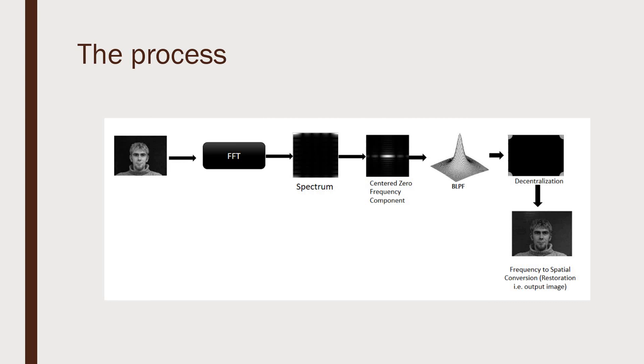Now what do we do? The process is simple. I have an input image, it goes to the FFT, the spectrum is there, and then we center the zero frequency component. Then we apply BLPF, then decentralization, and finally we get the restored output image. I'll also give you the link to the codes so you can try it in your machine. Thank you for following the channel. If you like the content, please subscribe and give a thumbs up.